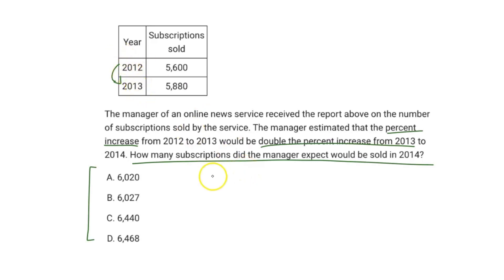To do that we're just going to do 5,880 minus 5,600. If you took chem it's kind of like final versus initial over initial, so our initial here would be 5,600.